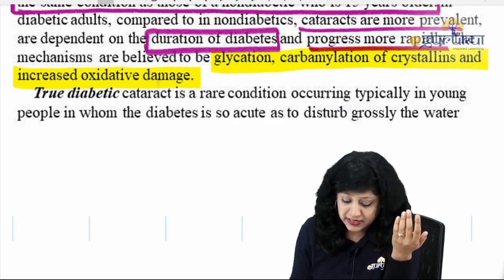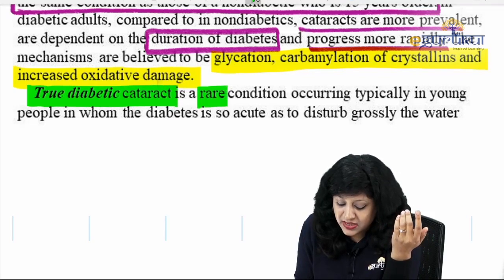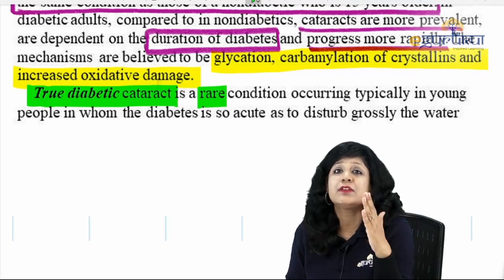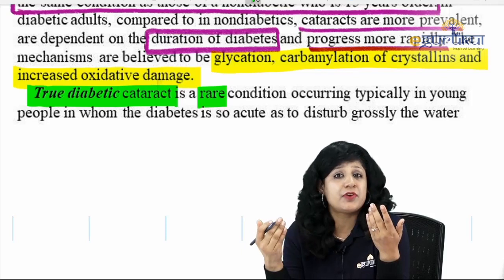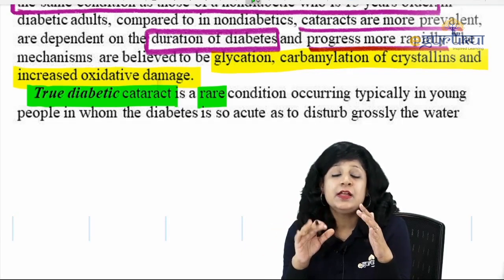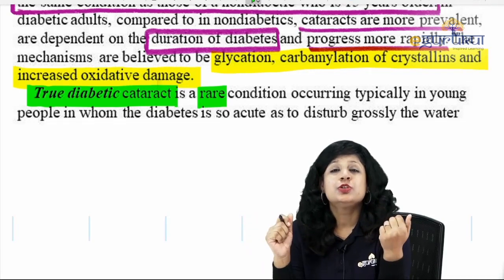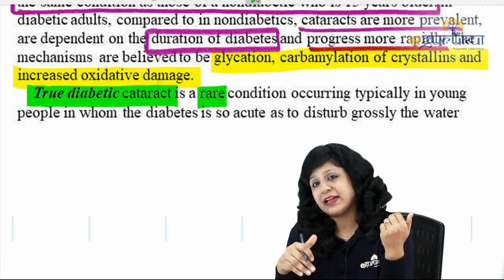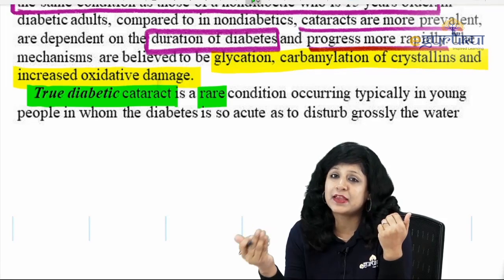This was about the presenile cataract. If we talk about the true diabetic cataract — this is a rare condition, but it is more commonly asked and more specific to diabetes. Do not get confused that the true metabolic cataract found in diabetes is more common — it is rare. But rarer things are fancier to ask. They ask about the snowflake cataract, but certainly the presenile cataract is more common in diabetic patients.